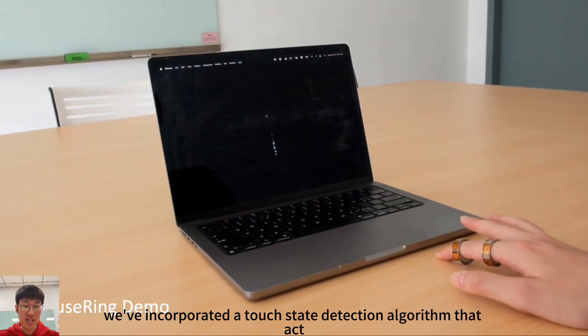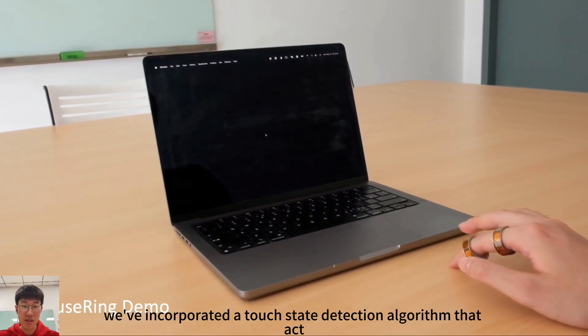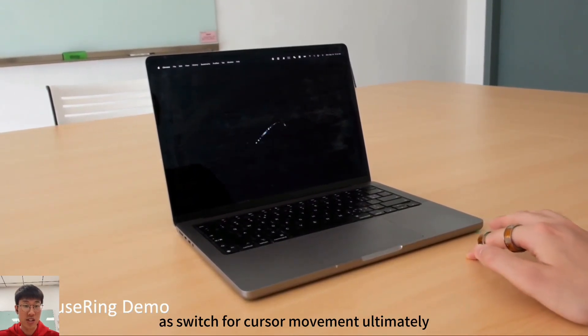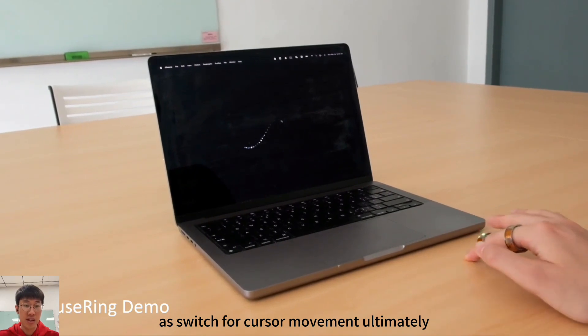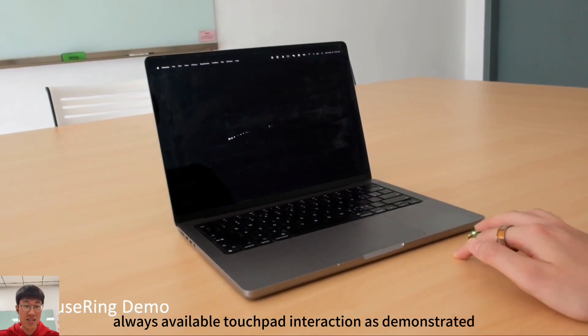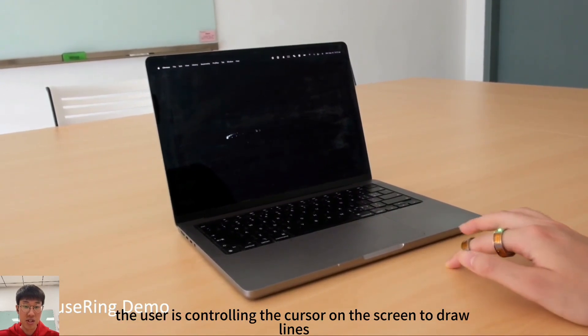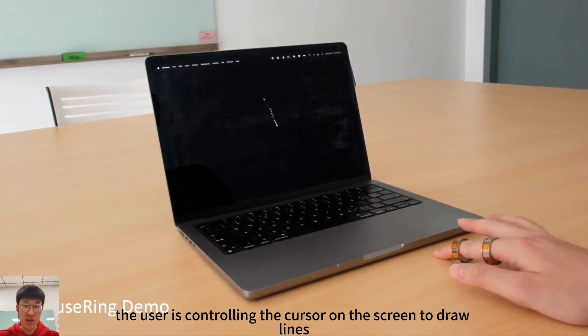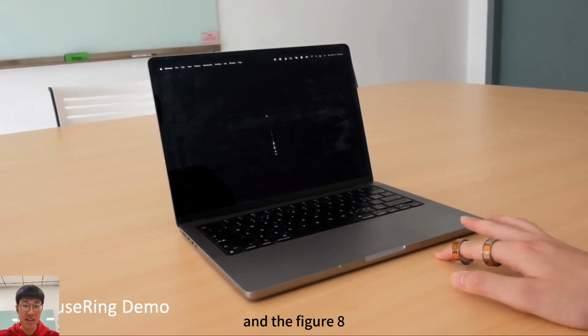Moreover, we have incorporated a touch state detection algorithm that acts as a switch for cursor movement. Ultimately, MouseRing enables always available touchpad interaction. As demonstrated, the user is controlling the cursor on the screen to draw lines and the figure eight.